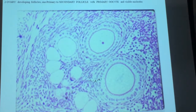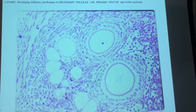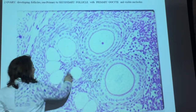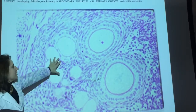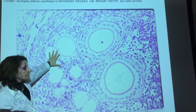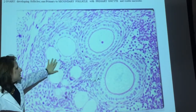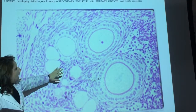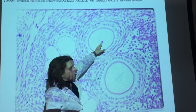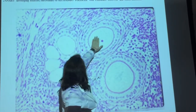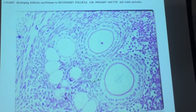This is part of the ovarian cortex. These don't have any nuclei in there, so these are atretic follicles. This is after the corpus albicans — it's starting to deteriorate. And you can actually see this is a nucleolus of a primary oocyte, so this is a primary follicle.